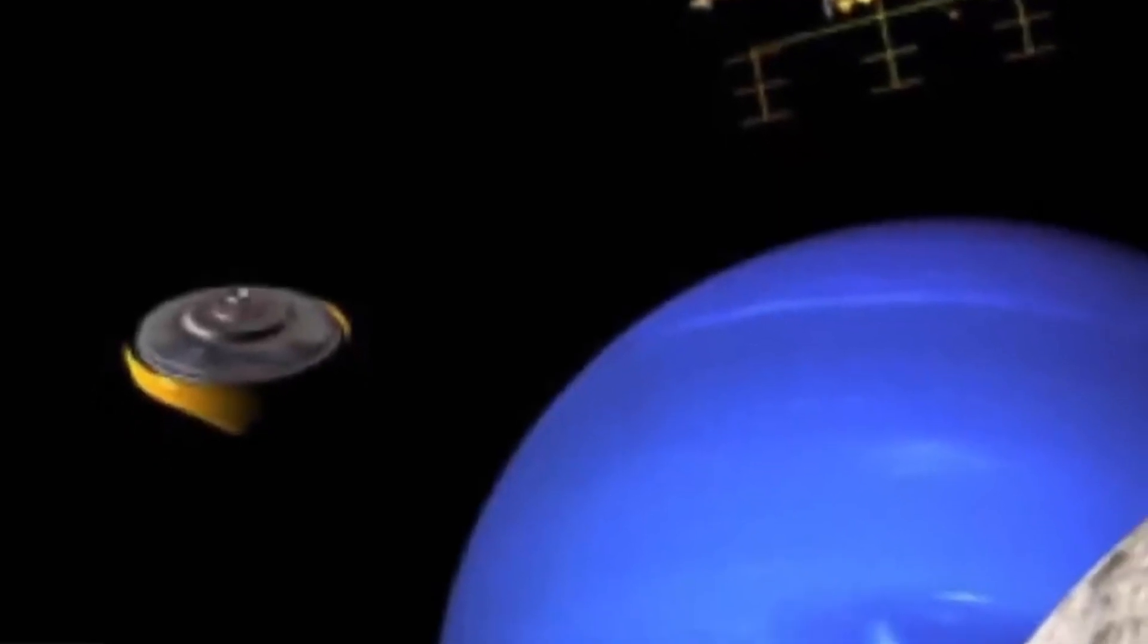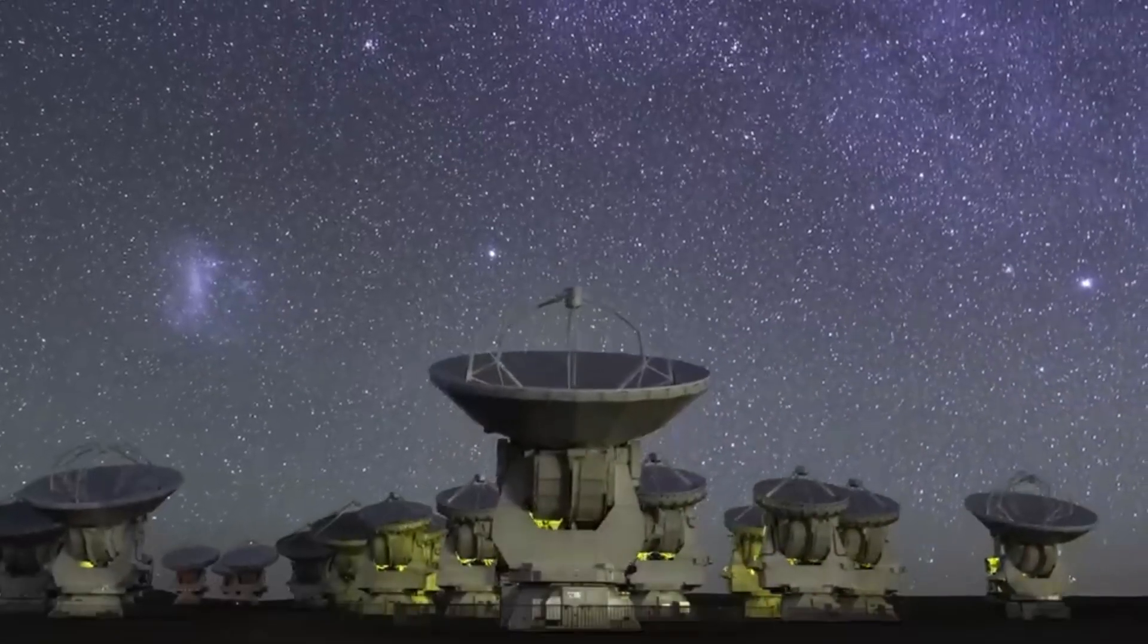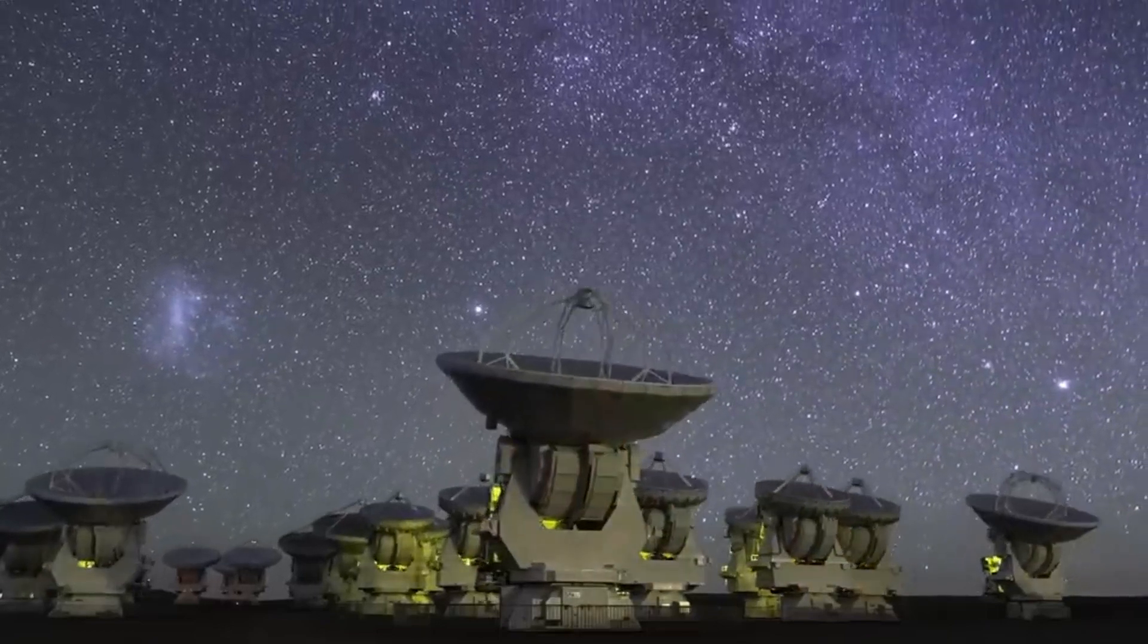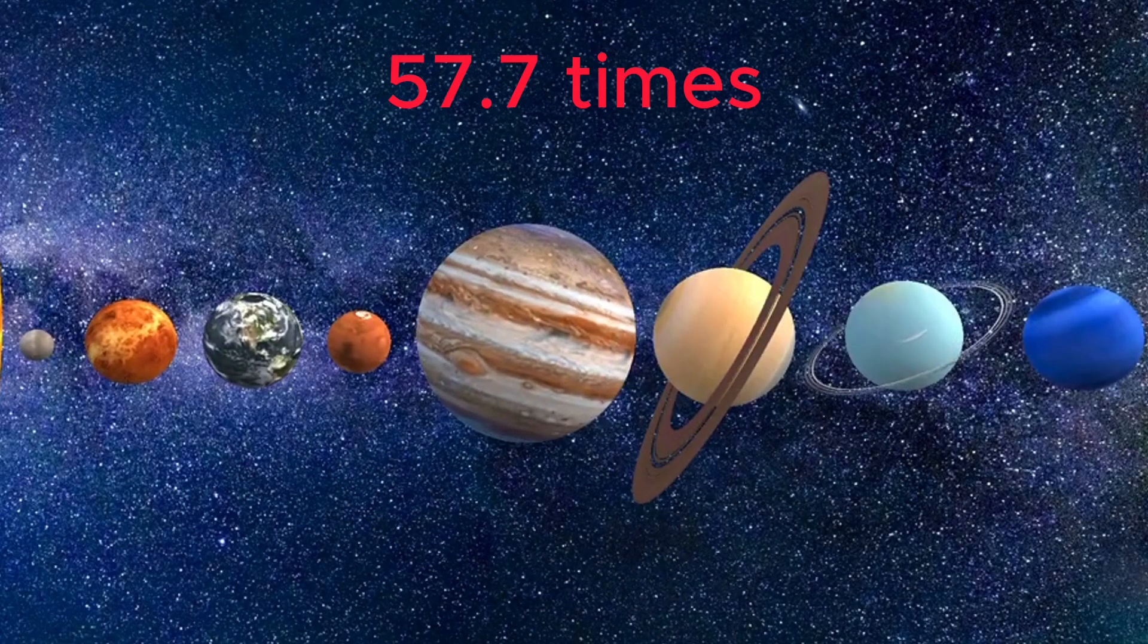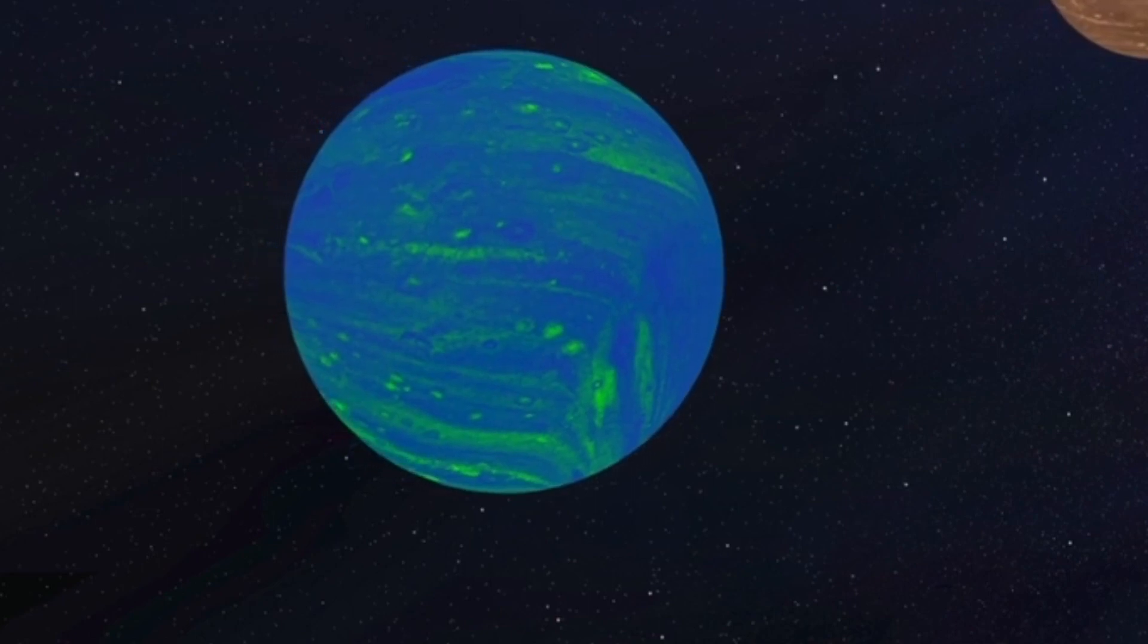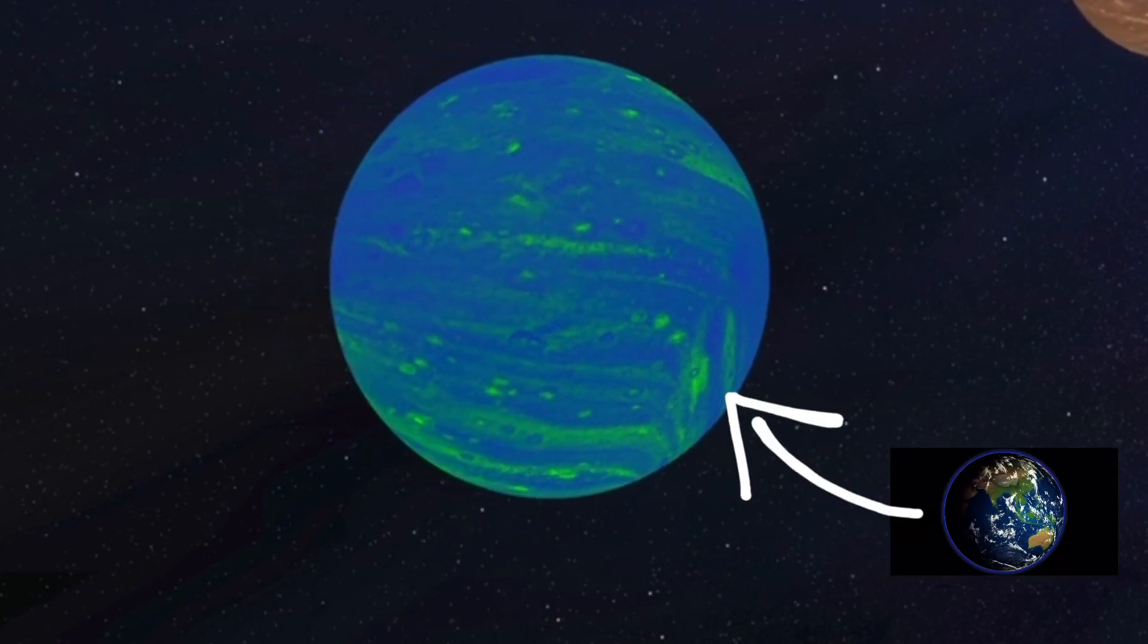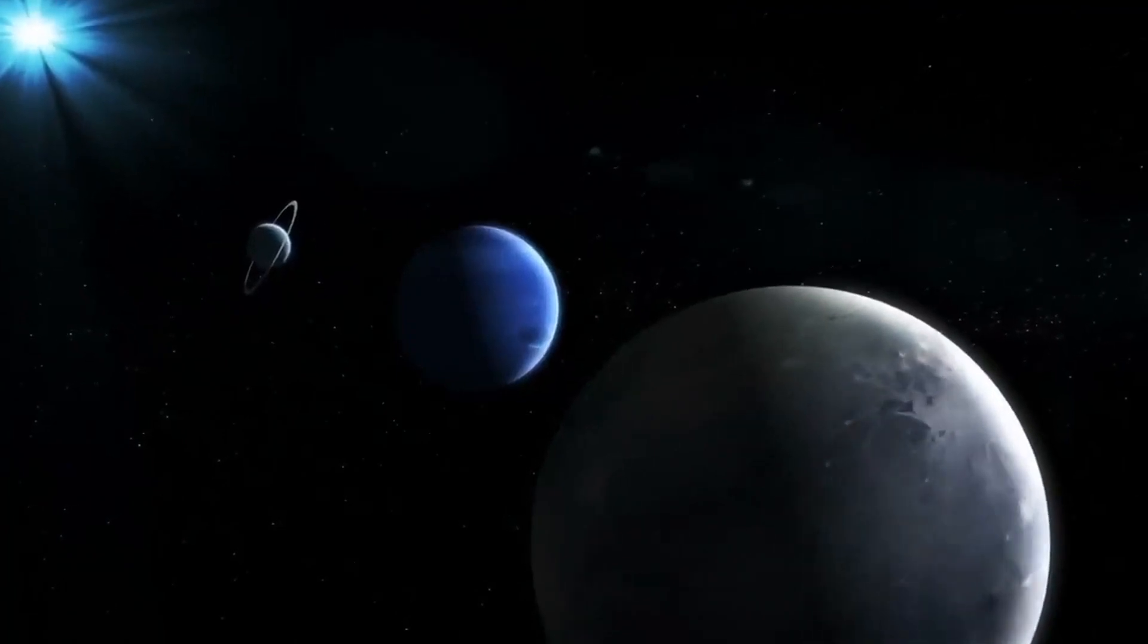And before we conclude our journey, let's talk about Neptune's size. This giant is 57.7 times larger than Earth in volume, making it the fourth largest planet in our solar system. This means you could fit nearly 57 Earths inside Neptune. Its vastness and mysteries continue to intrigue scientists and stargazers alike.